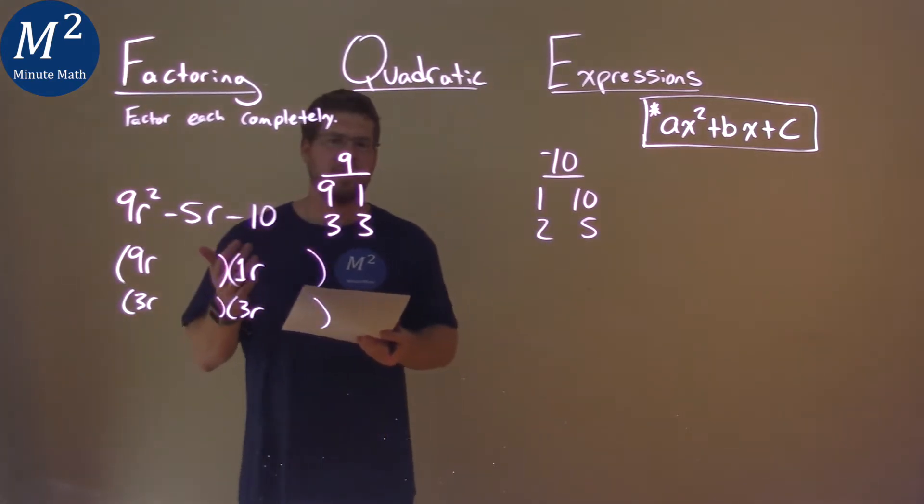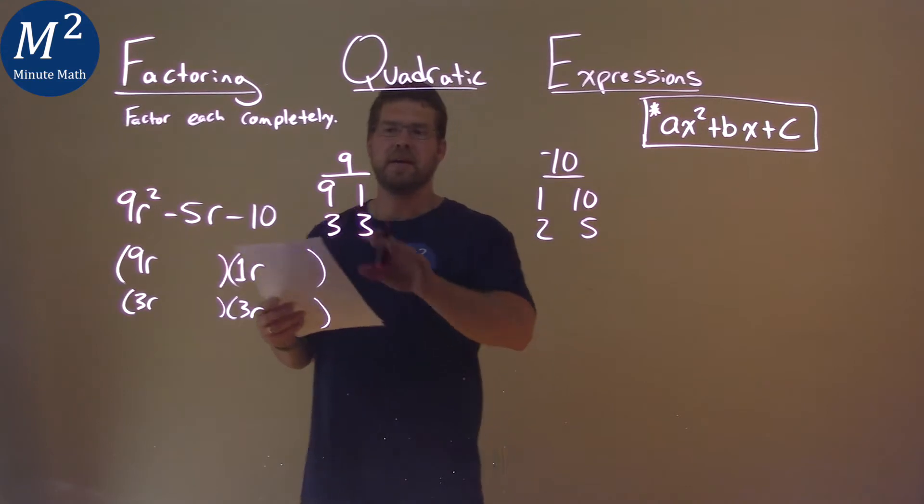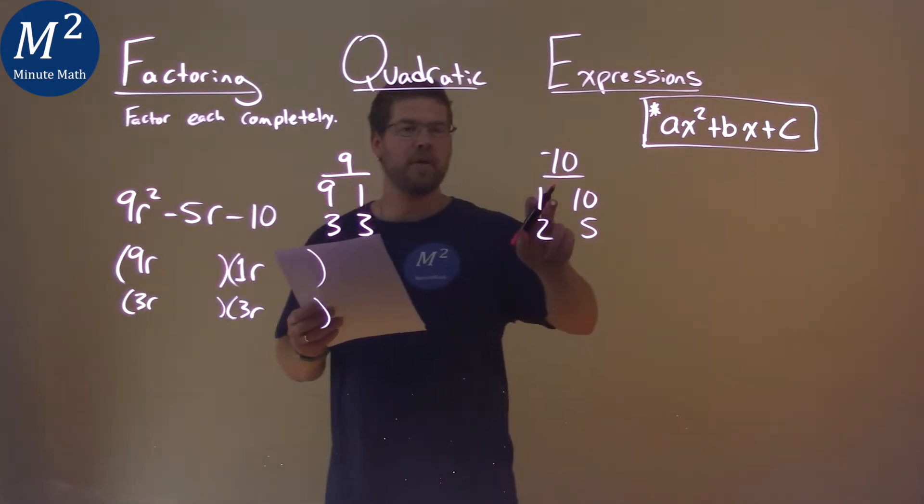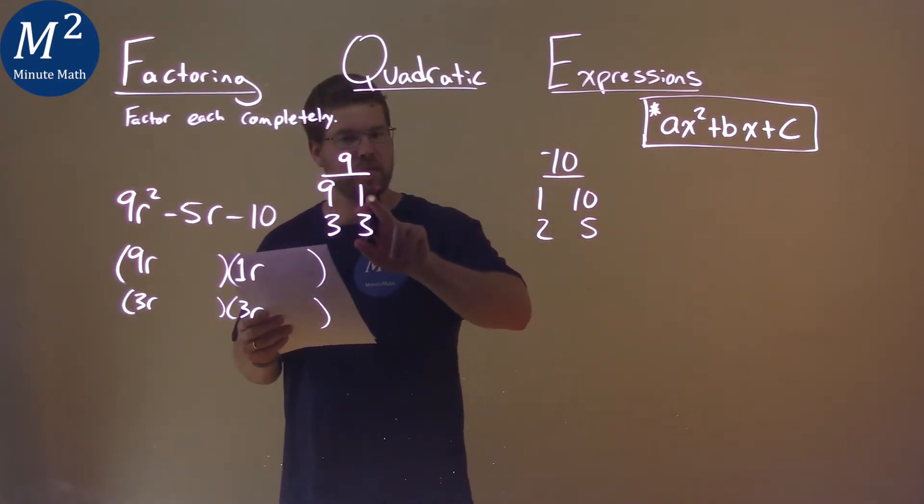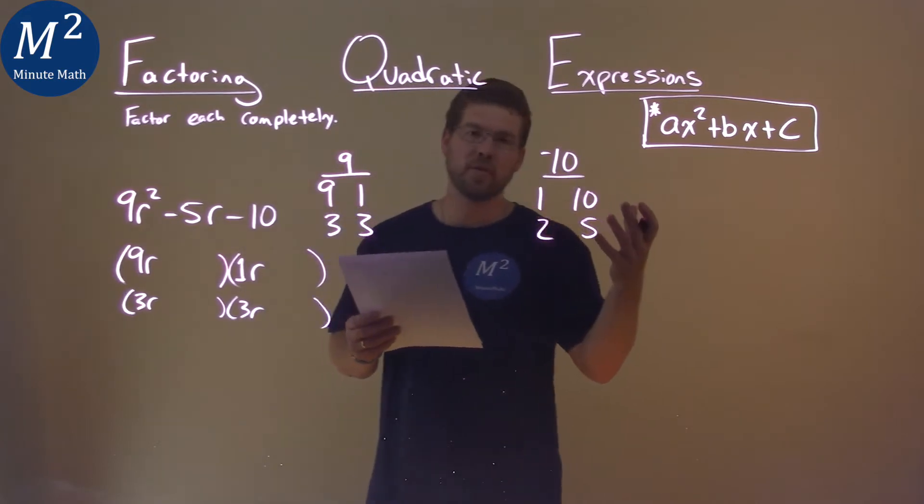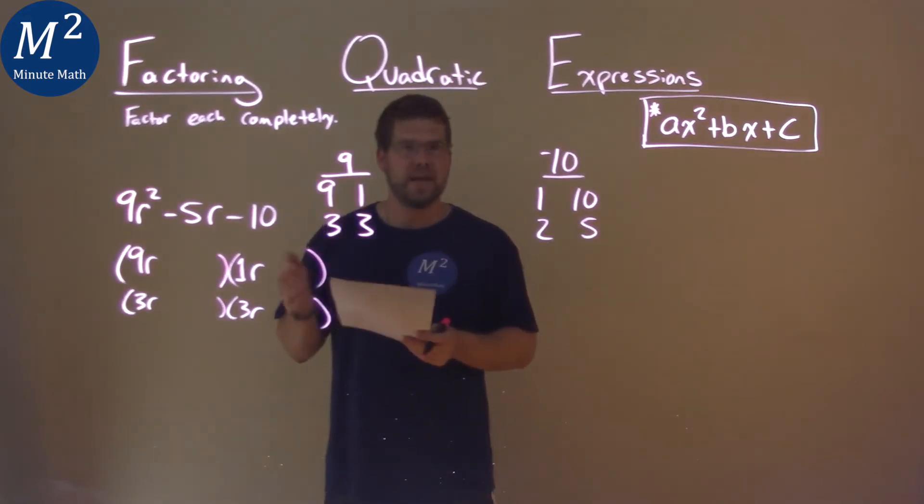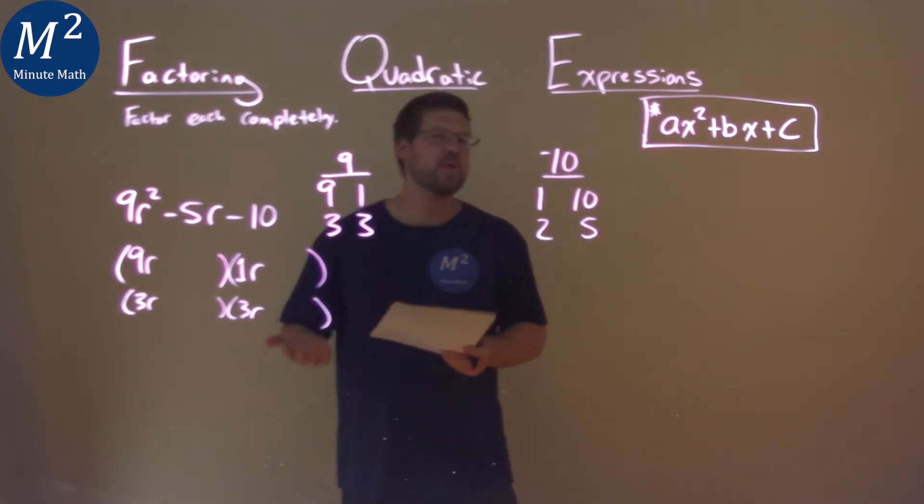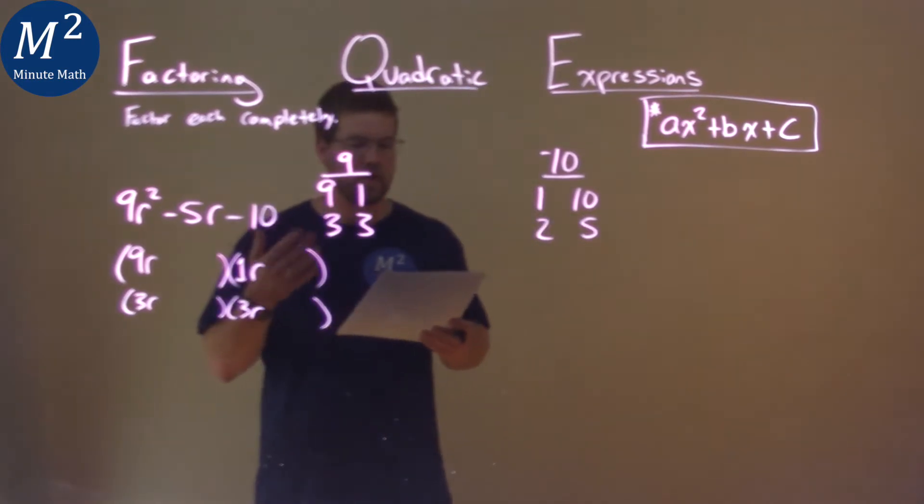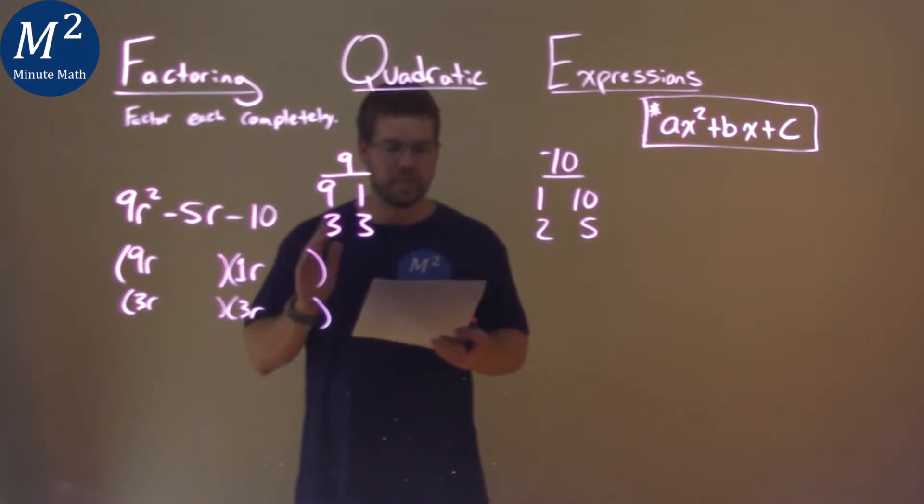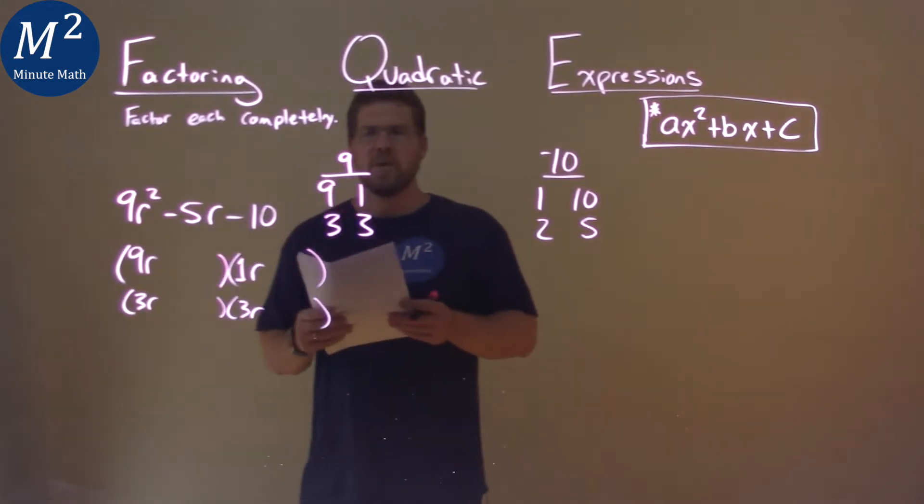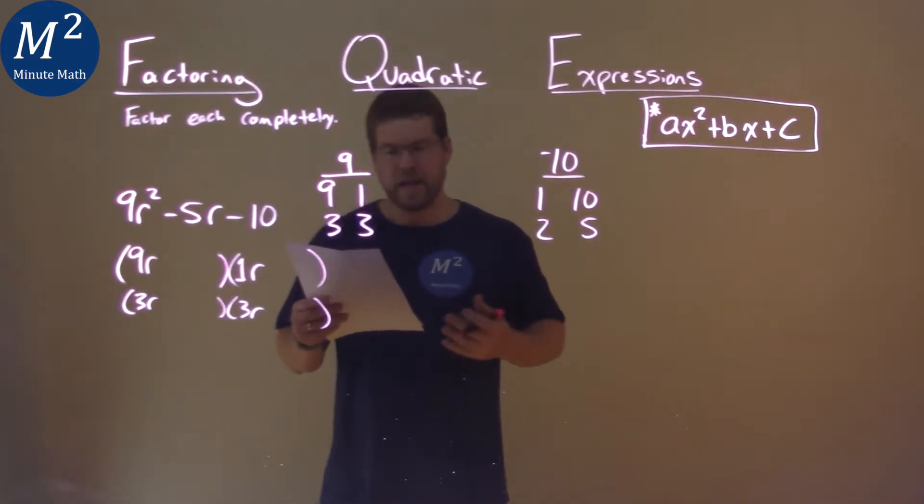Right off the bat, I'm looking at this, and we know what we have to do is say: one of these numbers times another one of the pairs, plus one of the first values times one of the other ones. Add them together, can we get -5? Nothing really jumps out at me, so I'm going to test all of them.